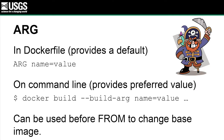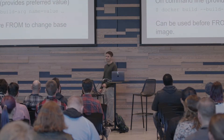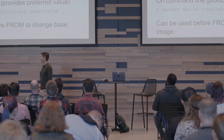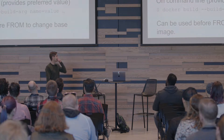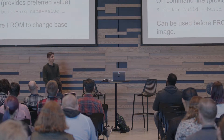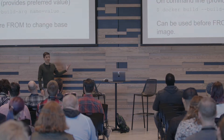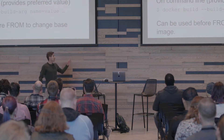The first instruction I want to talk about is ARG. You put arg name equals value in your Dockerfile — that value is a default. When building your image, you use --build-arg name=value to override it. If you don't specify it at build time, you get the default from the Dockerfile. The trick is that if you put arguments before your FROM instruction, you can use the argument to change your base image.